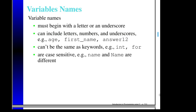What are considered legal variable names? In C, legal variable names begin with a letter or an underscore. Note that underscores have meaning to programmers that typically indicate system programming, so you probably shouldn't get in the habit of naming all your variables beginning with underscores — although it is technically legal.